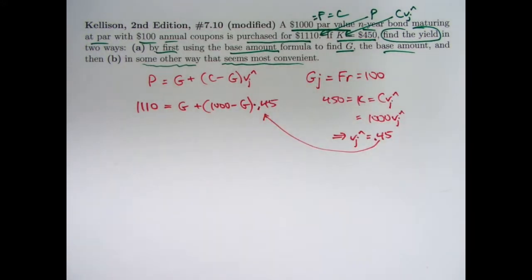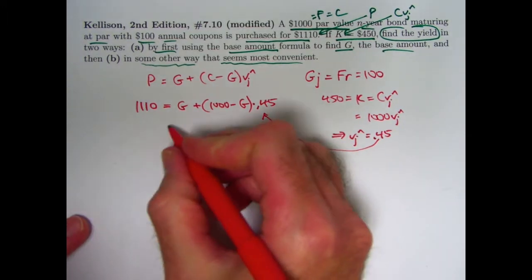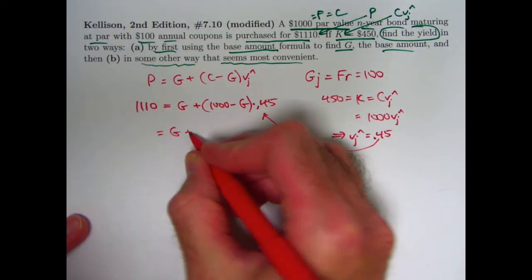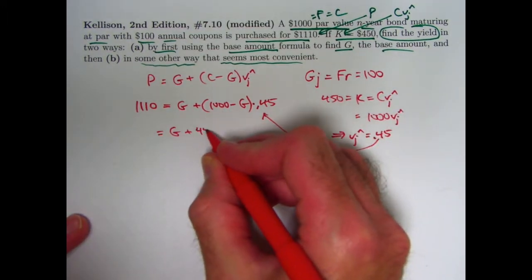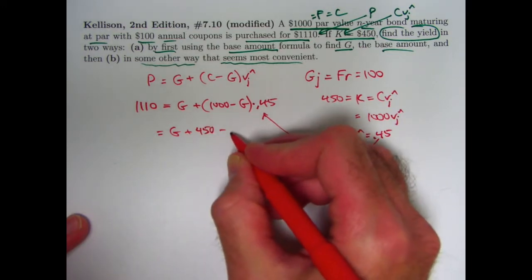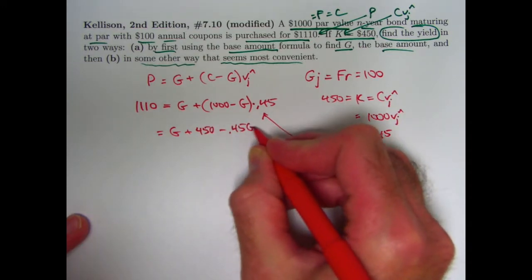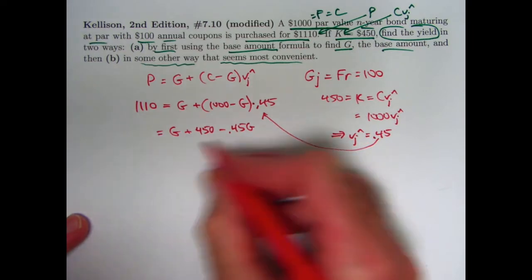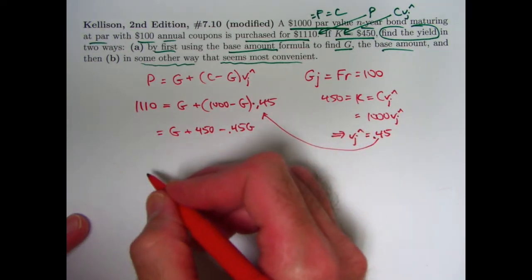And this is going to give us a linear equation that we can solve for G. Let's expand this out. It's capital G plus 0.45 times a thousand is 450. We also have a minus 0.45 times capital G. Let's combine the G term, subtract 450 from both sides.